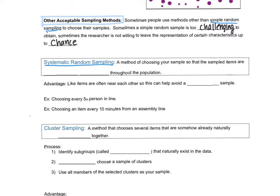The first one we're going to call systematic random sampling. So this is still random, it's just a little bit different than fully random, like pulling a number out of a hat. This is a method of choosing your sample so that the sampled items are equally spaced throughout the population. An advantage would be that items near each other, like students sitting next to each other, are often near each other. So like items are often near each other and so this can help avoid a biased sample.